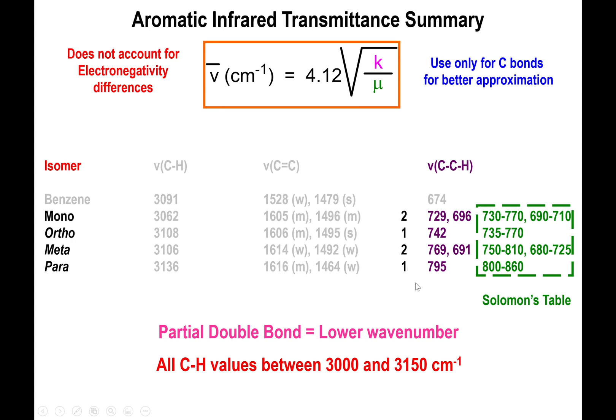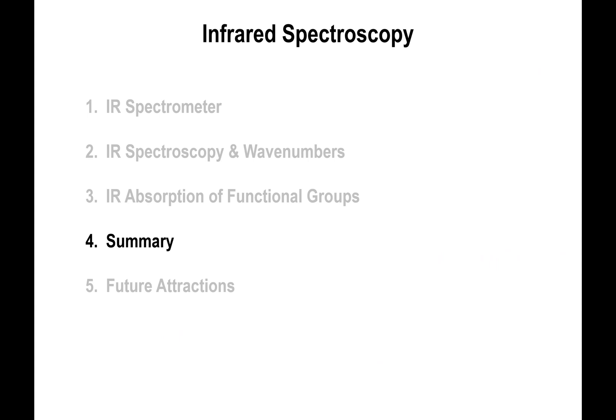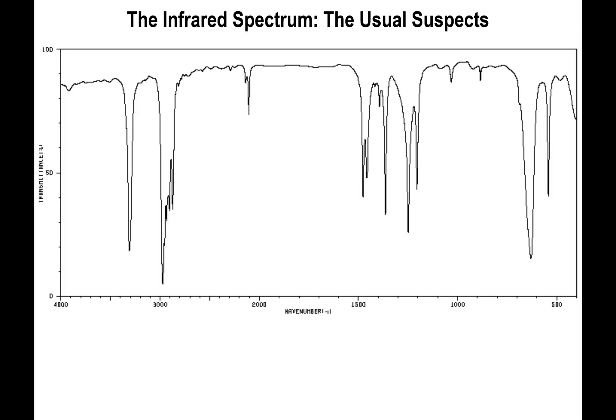So that completes the story for IR spectroscopy. The last thing I want to leave you with is the regions in the IR spectrum that you want to be completely aware of. There's basically three regions that you want to be looking at every single time. You want to always focus on the 3000 line. If you're above it you have a certain kind of bonds, if you're below it you have some other type of bonds.